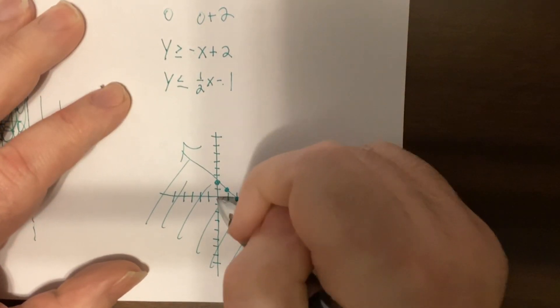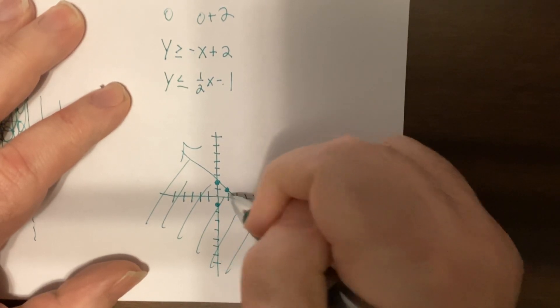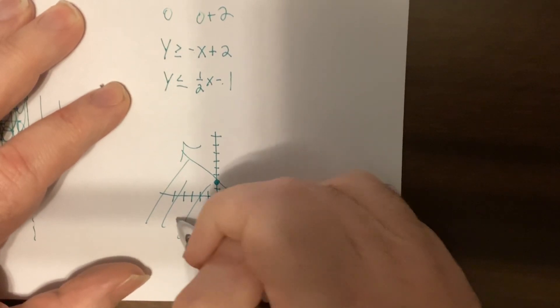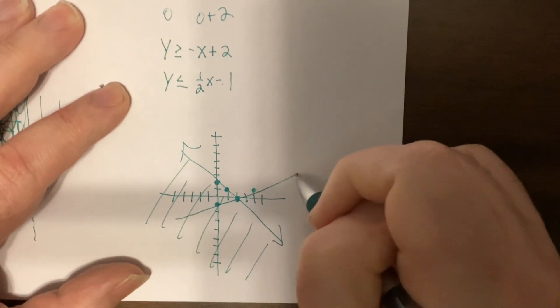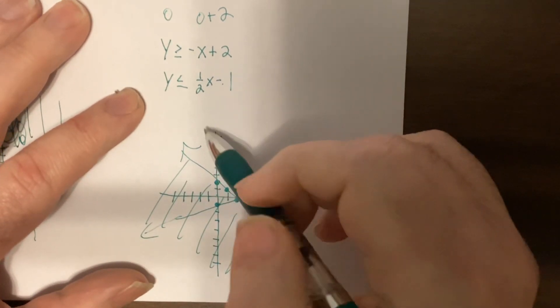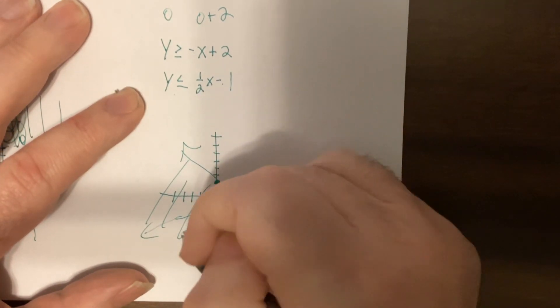Y-intercept is negative one. Slope is a half. Up one, over two. Up one, over two. Put in zero, zero again. Is zero less than negative one? Nope.